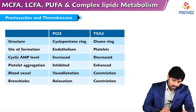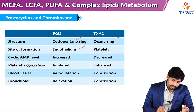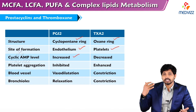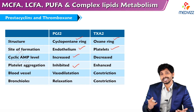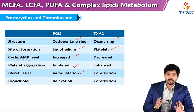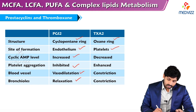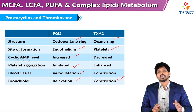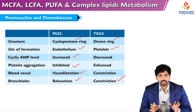Comparing prostacyclins and thromboxanes: PGI2 has a cyclopentane ring structure, while thromboxane has an oxygen-containing ring. The site of formation is the endothelium for prostaglandins and platelets for thromboxanes. Cyclic AMP levels are increased by prostaglandins whereas thromboxanes decrease cyclic AMP. Platelet aggregation is inhibited by prostaglandins but increased by thromboxanes. On blood vessels, prostaglandins cause vasodilation whereas thromboxanes cause vasoconstriction. On bronchioles, prostaglandins cause relaxation whereas thromboxanes cause constriction.